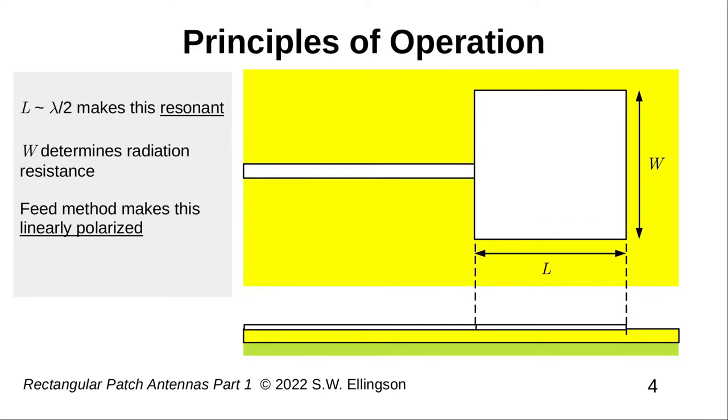Specifically, we'll choose the particular value of L that's closest to one-half wavelength at which the patch is resonant. And by resonant, we mean that the imaginary part of the impedance of the antenna is zero. At resonance, there is no stored energy, so the power is either reflected or radiated.